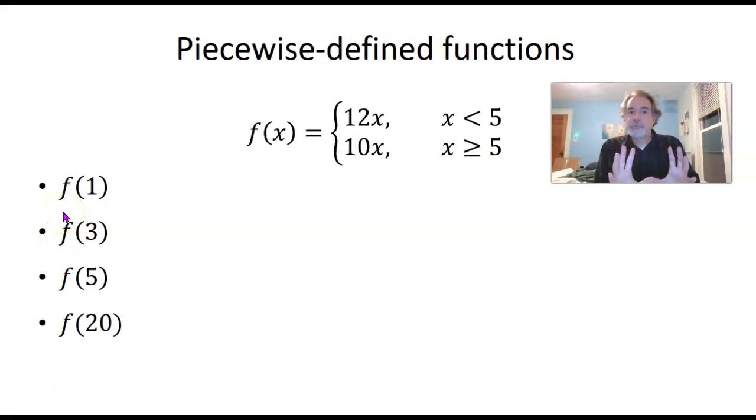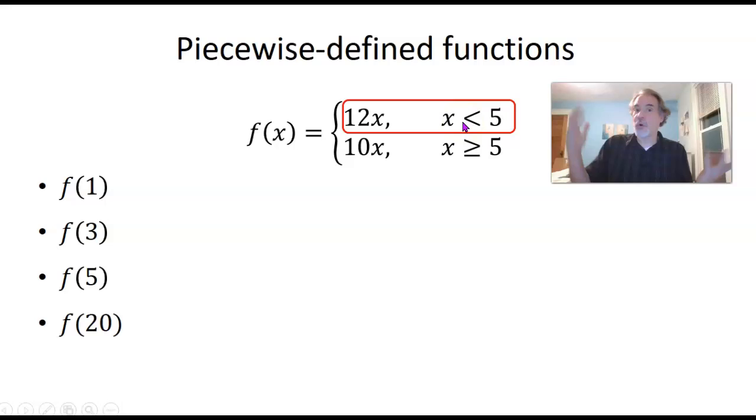Let's look at examples of actually evaluating this. If I ask, what is f of 1? What do you get if you put 1 in for X? Well first you got to think: is 1 a number that's less than 5, or is it a number that's greater than or equal to 5? It's less than 5, of course, so we're going to be calculating 12 times—remember X was 1—so 12 times 1 is 12. So f of 1 is 12.